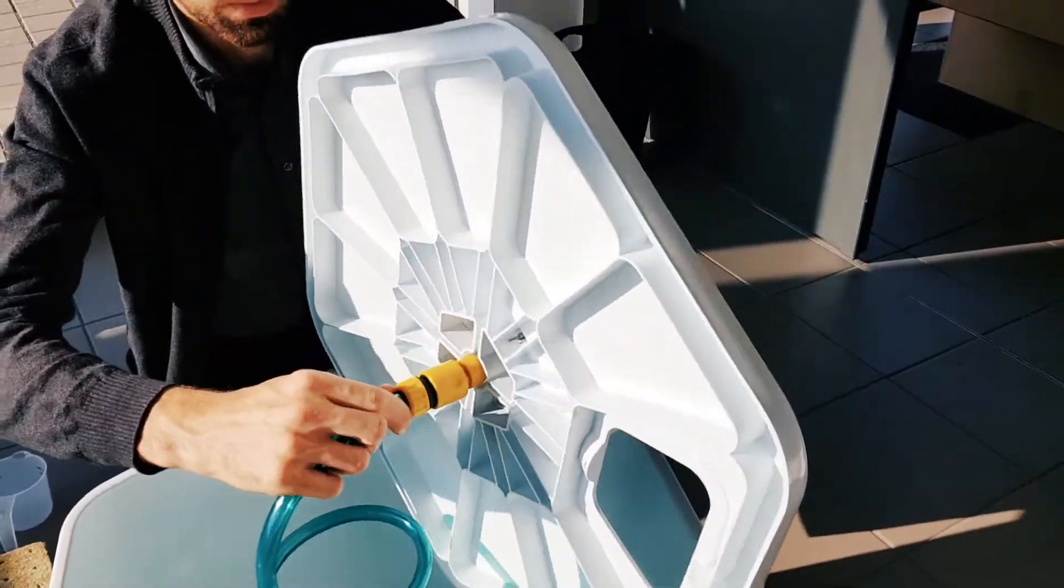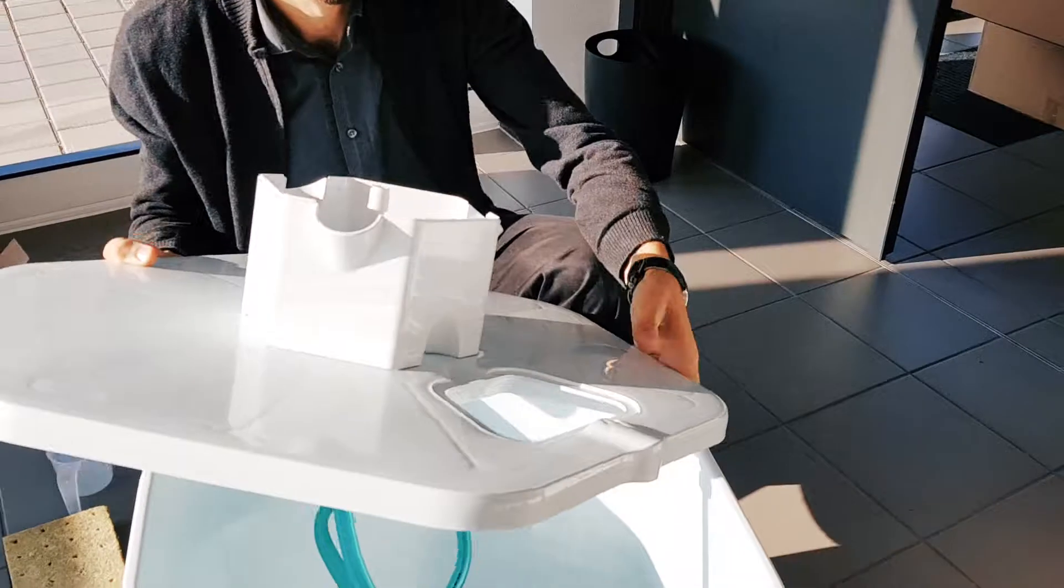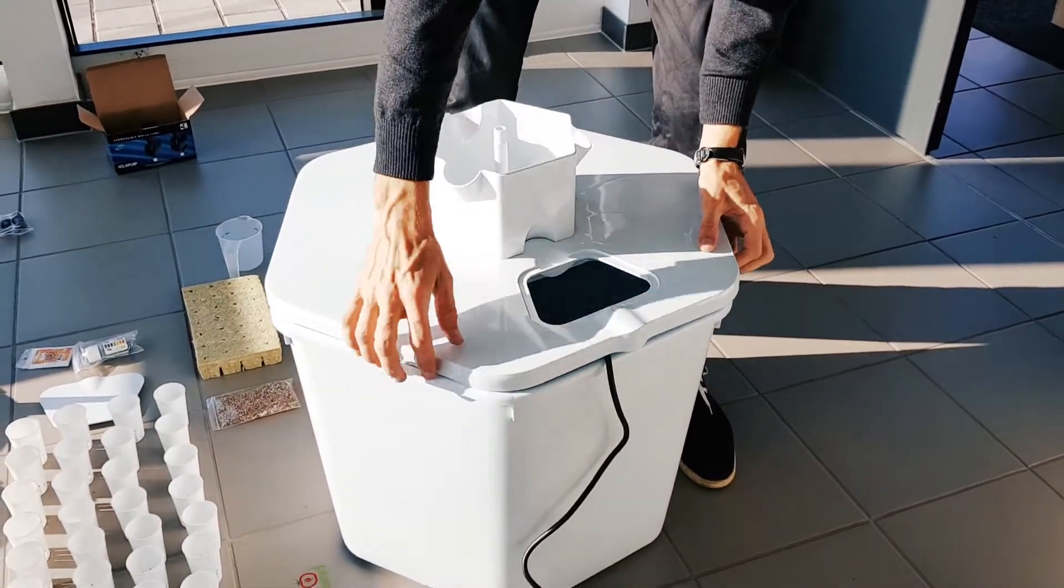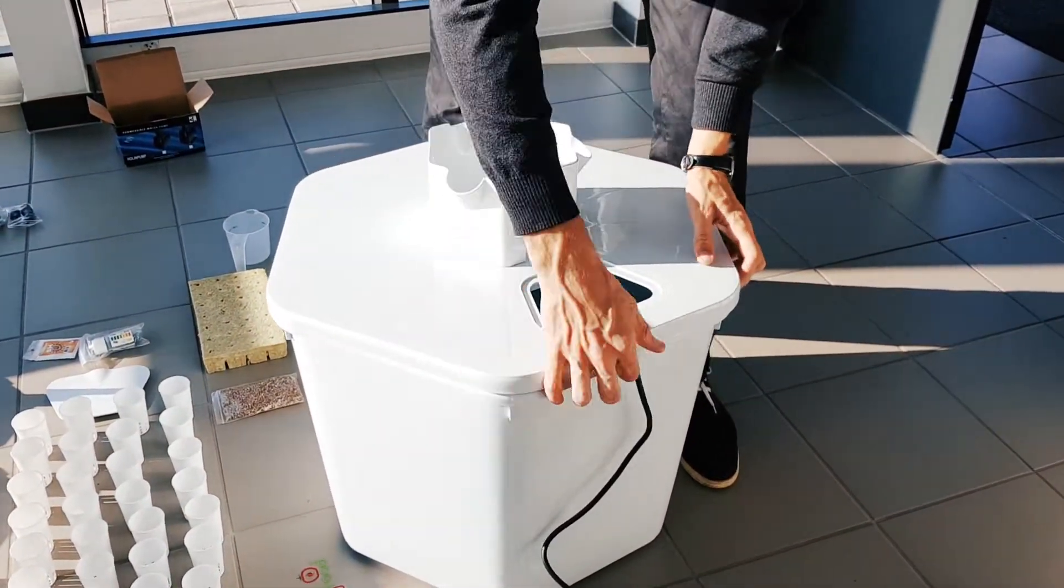Click the Quick Connector to the bucket lid. Place the pump cable over the grooved plastic section of the bucket lid and click in place.